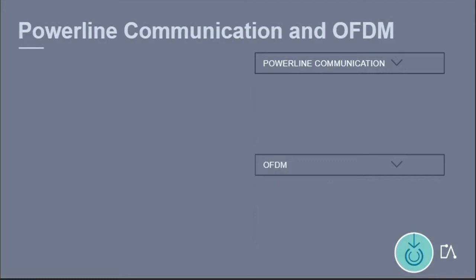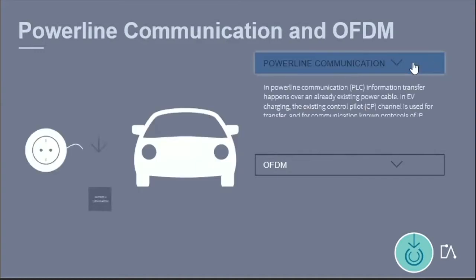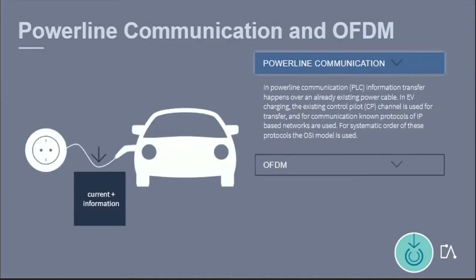In high-level communication according to ISO 15118, the message transfer is based on a powerline communication specified by the Home Plug Green PHY, which in turn is based on OFDM. In powerline communication, information transfer happens over an already existing power cable.